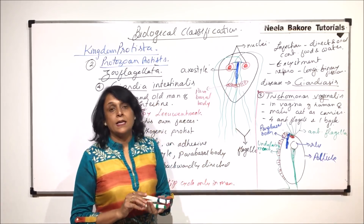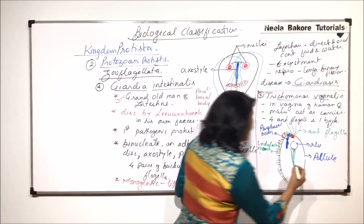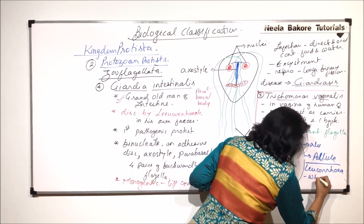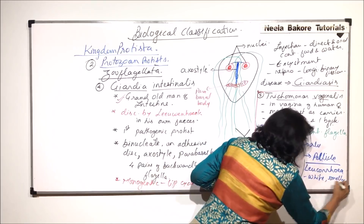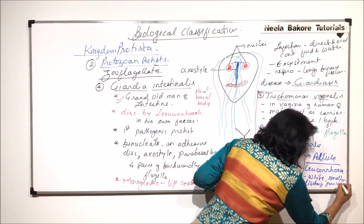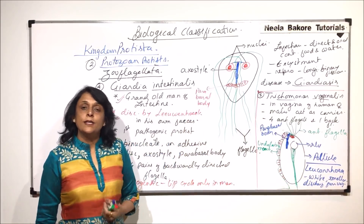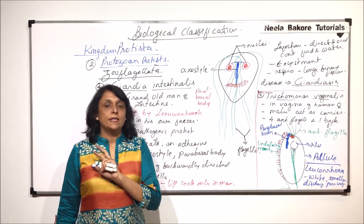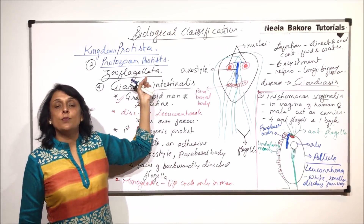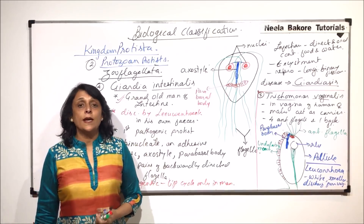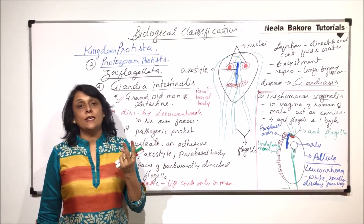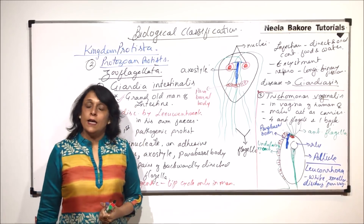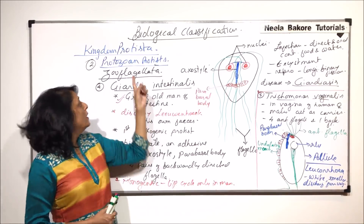This is Trichomonas vaginalis. The disease it causes is known as leucorrhea, which is a white, smelly discharge from the vagina. In all five zooflagellates, flagella are definitely present, which is why they are kept under the group Zooflagellata. Most of them are endoparasites and pathogenic. Some are digenetic, needing two hosts to complete their life cycle, while some are monogenetic. After zooflagellata, from the next part we'll start with another group of protozoan protists.